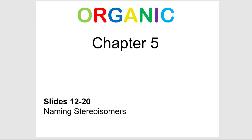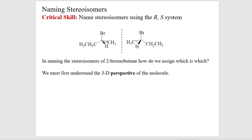Chapter 5, Slides 12 through 20. Now what we want to do is take a look at stereoisomers and use IUPAC rules to figure out how to distinguish between these using our naming system.